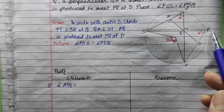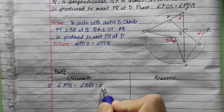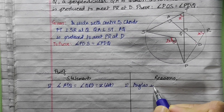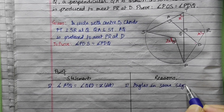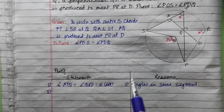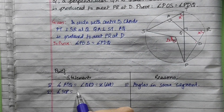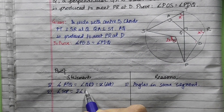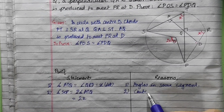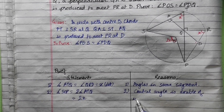This is what we call angles in the same segment. Angles in the same segment are equal. Let's take the angle SOP — this angle is double, equal to 2x.